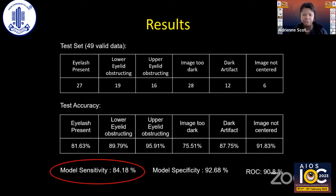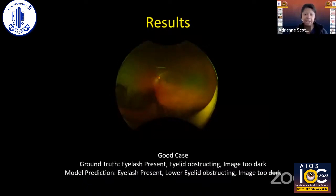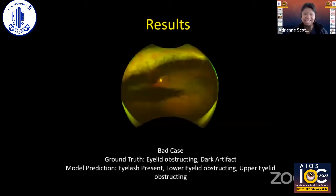Our model performed fairly well with reasonable sensitivity, specificity, and receiver operating characteristics. The confusion map shows good true negative and true positive rates, with the algorithm performing especially well for clear artifacts such as eyelash or eyelid presence. There were cases where the computer and I agreed the image had too much flash, and cases where we didn't quite agree on the exact type of artifact present.